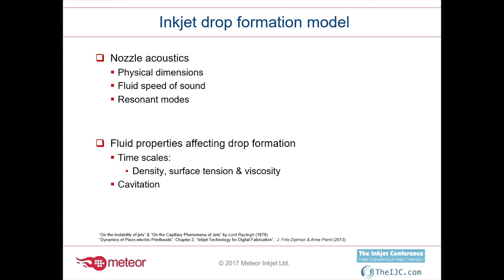There are two main aspects to drop generation in inkjet. One is related to the nozzle acoustic properties, which are typically related to the physical dimensions of the nozzle and the speed of sound in the fluid, and some resonant modes that result from those two interactions. From the point of view of fluid properties affecting drop formation, density, surface tension, and viscosity are the three main ingredients — they dominate the time scales necessary to create a drop, or for the drop, once it has landed on the substrate, to reach its final form.